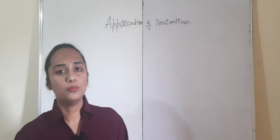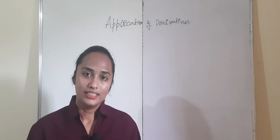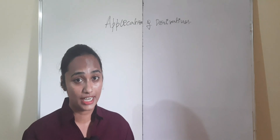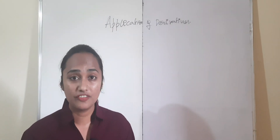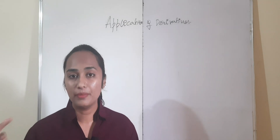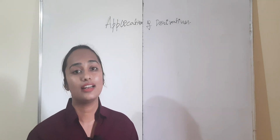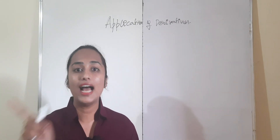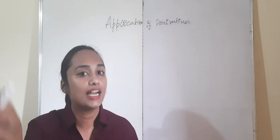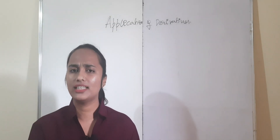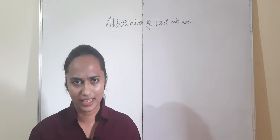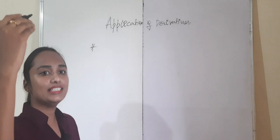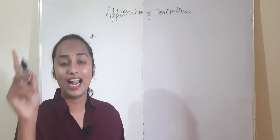Hey guys, welcome back to Masik's MMJ channel. Applications of derivatives are important — other explanations will be given. In the mid-term, the first exercise on rate of change of quantities is deleted, and exercises 6.4 and 6.1 are deleted — you don't have to study those. The first topic is finding the intervals in which the given function is increasing and decreasing — the increasing and decreasing function.